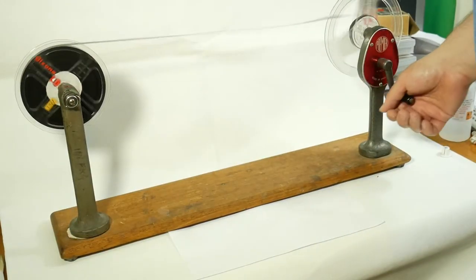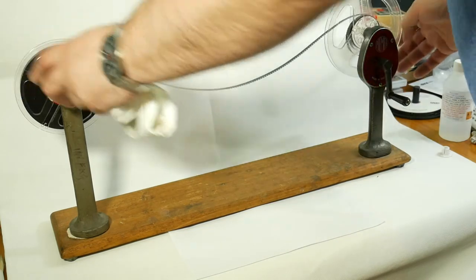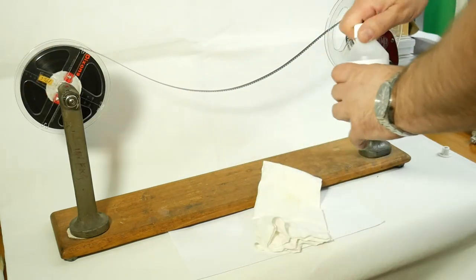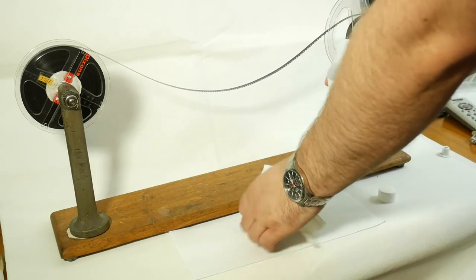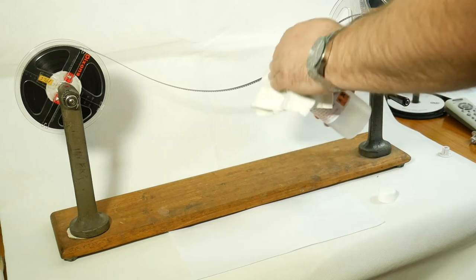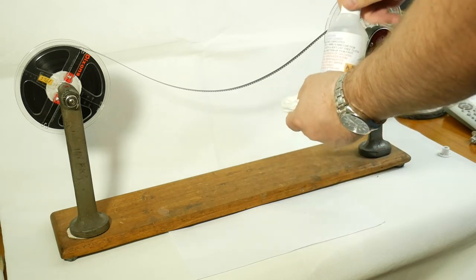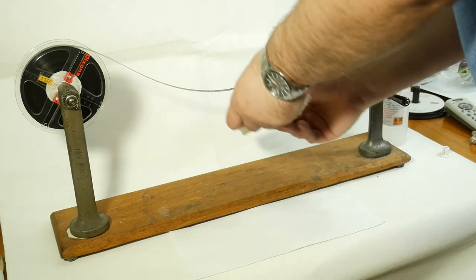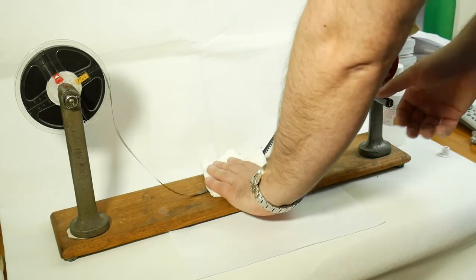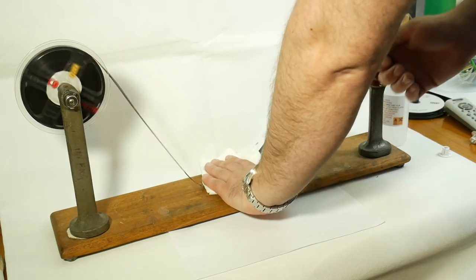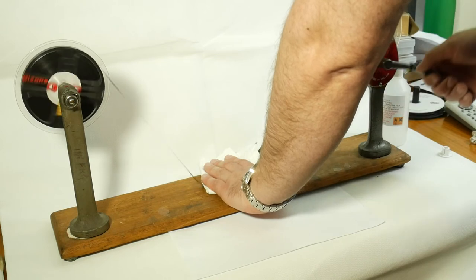You can also use a pair of rewind arms which is a really good way of cleaning your films because you've got more control and pressure over how fast you rewind the film from one spool to the other. Again, apply some to a cloth. You can fold the cloth over the film and just put the film onto the board and then gently wind the film onto the take-up spool.